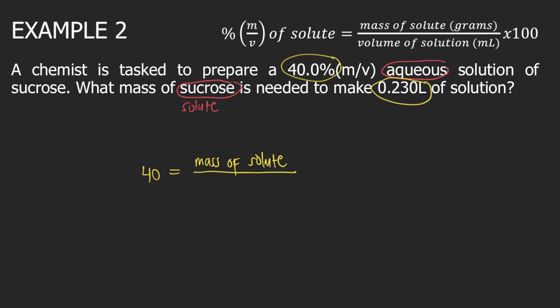We need the volume in mL, so we must convert 0.230 liters to mL. One liter is equivalent to 1,000 mL, so the liters cancel and 0.230 × 1,000 = 230 mL. So the volume of the solution is 230 mL.